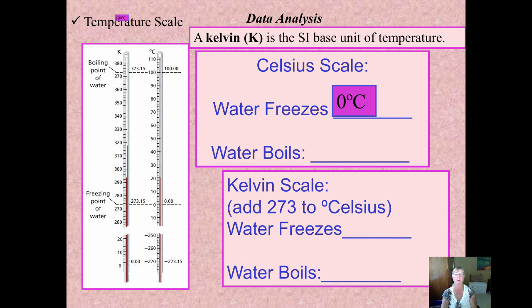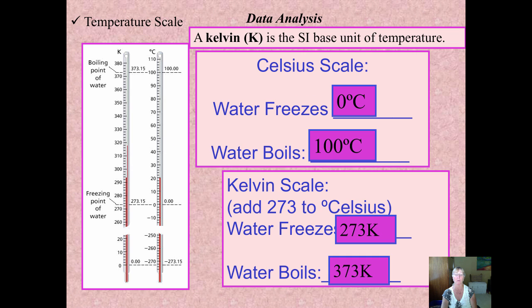So of course, water freezes at zero, boils at 100 on our Celsius scale. By adding 273 to these values, its freezing point of water on the Kelvin is 273 and boiling point is 373.